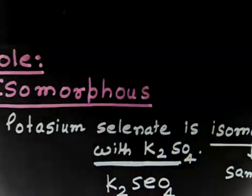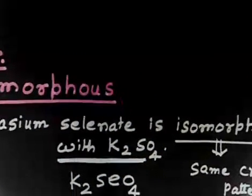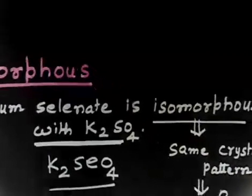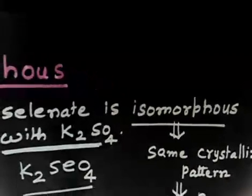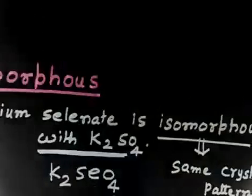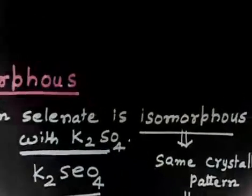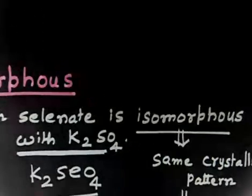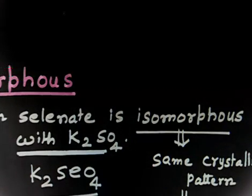What do you mean if two compounds are isomorphous? If compound A and compound B are isomorphous, the term means the two compounds will have the same crystalline pattern. Compound A crystallizes in one kind of pattern, and compound B will also crystallize in the same kind of pattern — this means atoms are placed in a similar manner.